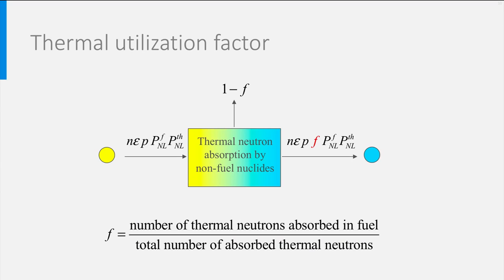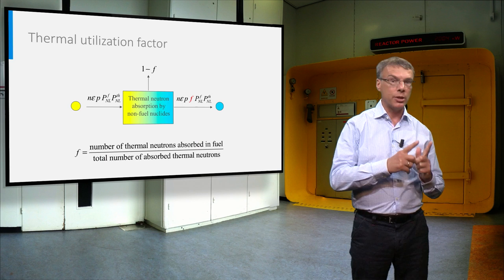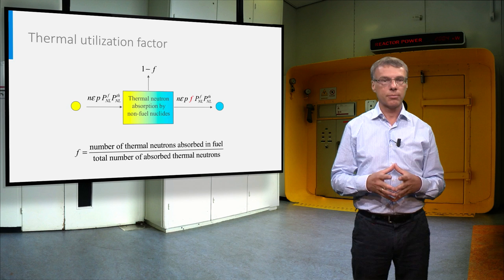However, we can distinguish between absorption by the structural materials on one side and by the fuel nuclides on the other. The fraction of the neutrons absorbed by the fuel nuclides, the uranium-235 and the uranium-238, is called the thermal utilization factor.